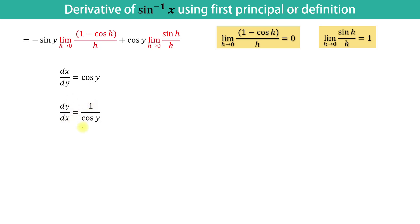The reciprocal of this term is dy over dx is equal to 1 over cos y. Now, our target is to write cos y in terms of x. We know the identity sin squared y plus cos squared y is equal to 1. Hence, cos squared y is equal to 1 minus sin squared y. This implies cos y is equal to plus minus square root of 1 minus sin squared y.